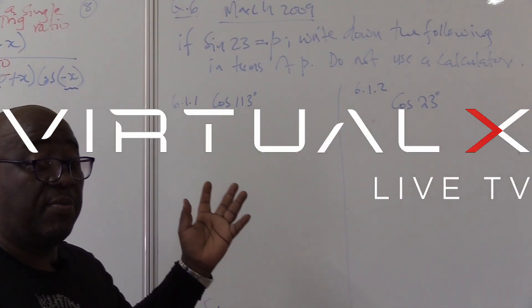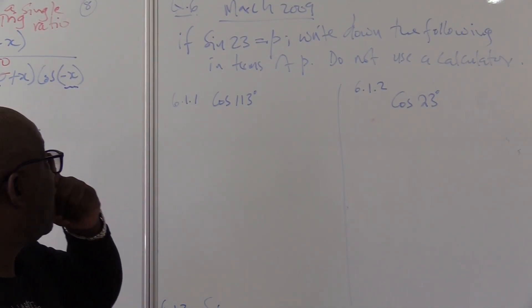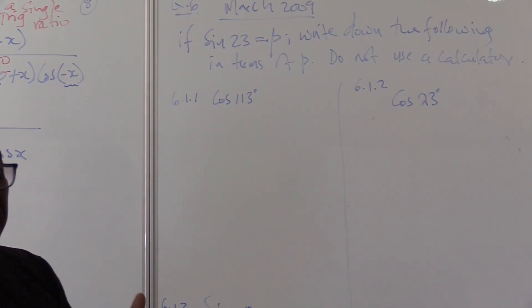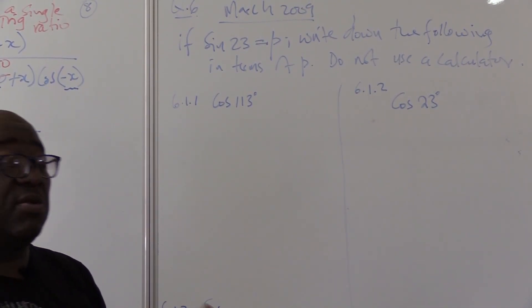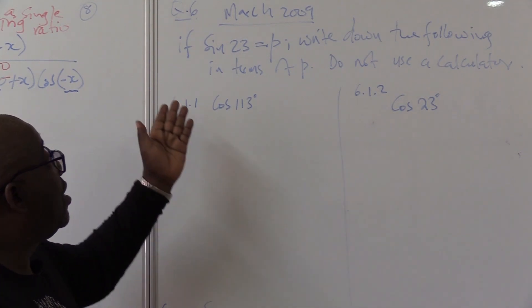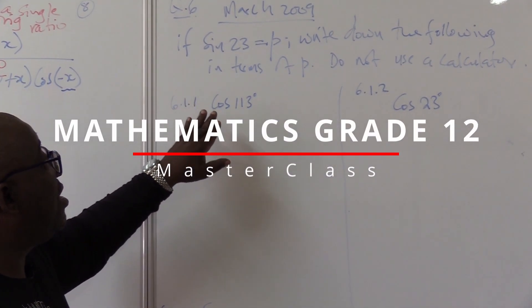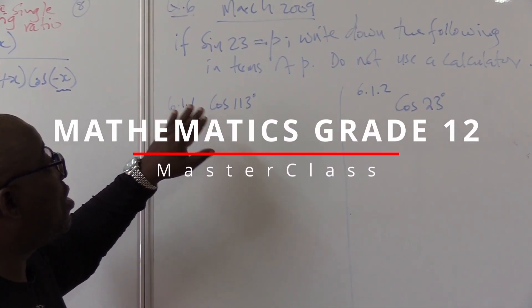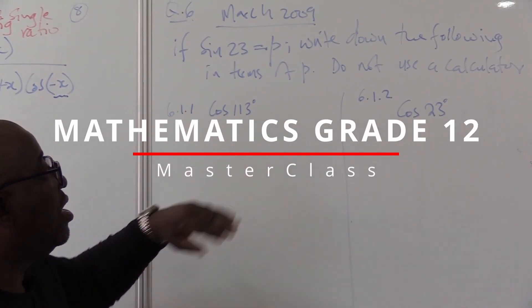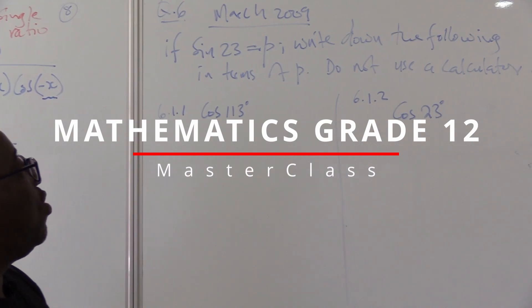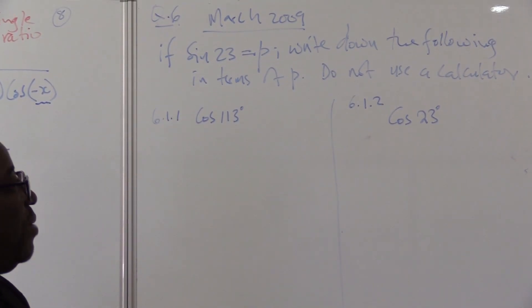In Grade 12, we always find problems like this, where you express something in terms of something. In this case, it says: if sine 23° is equal to P, write down the following in terms of P.